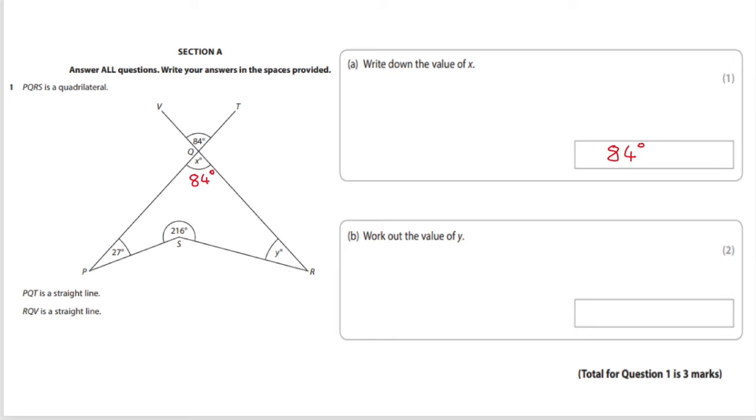Now quadrilaterals are four sided shapes with angles that all add up to 360 degrees.